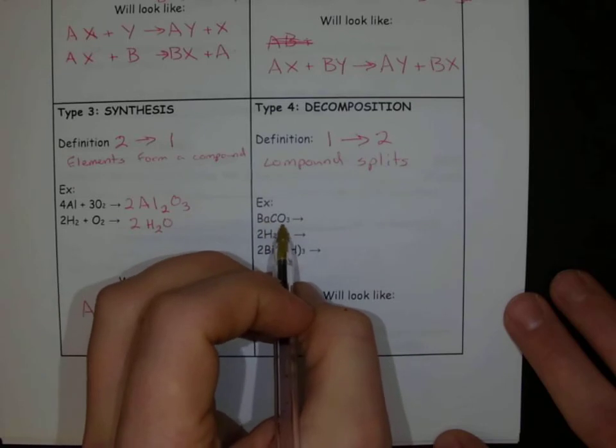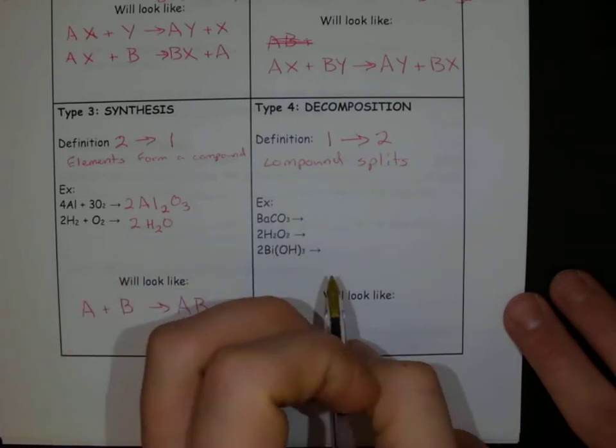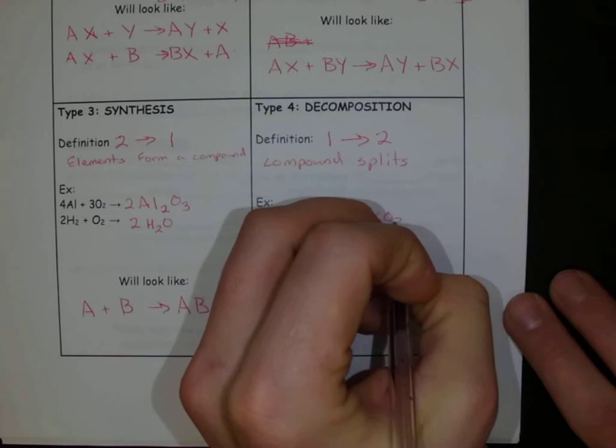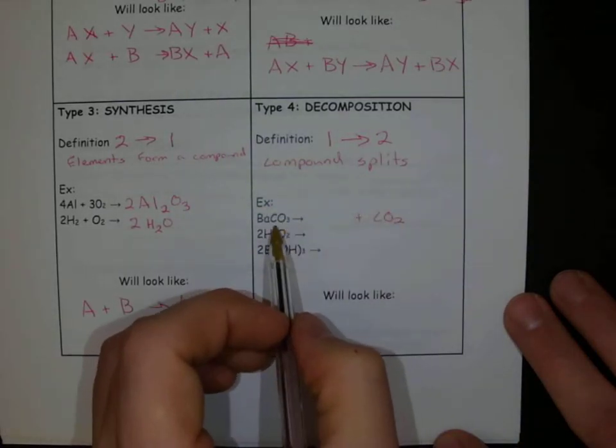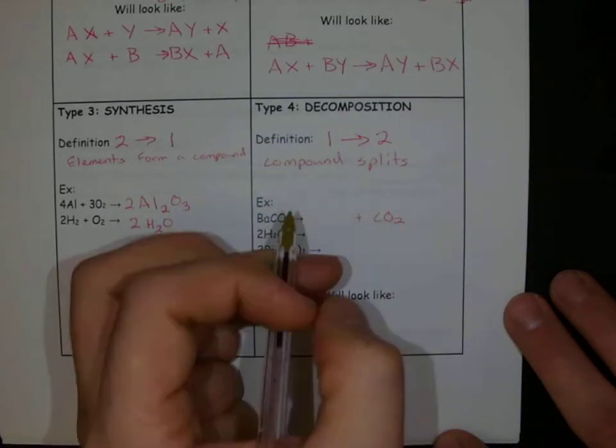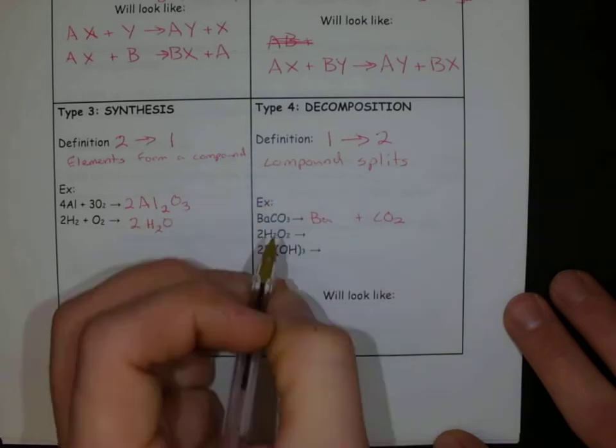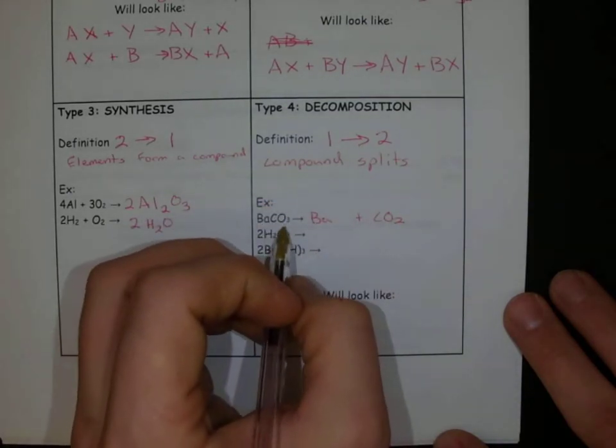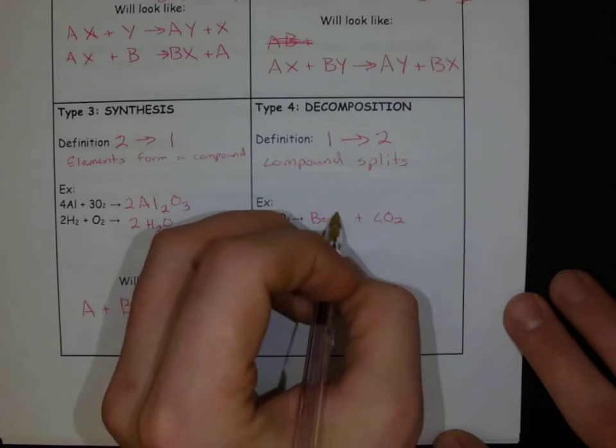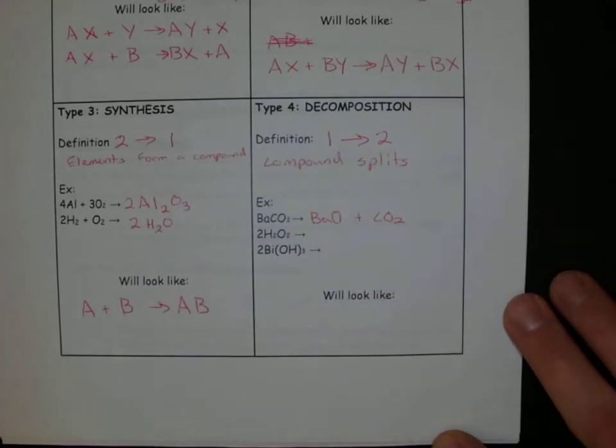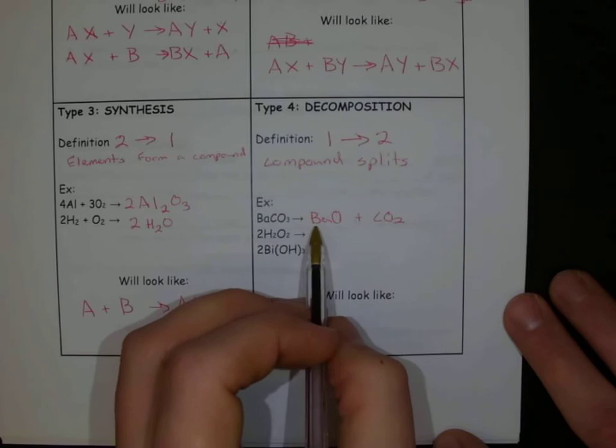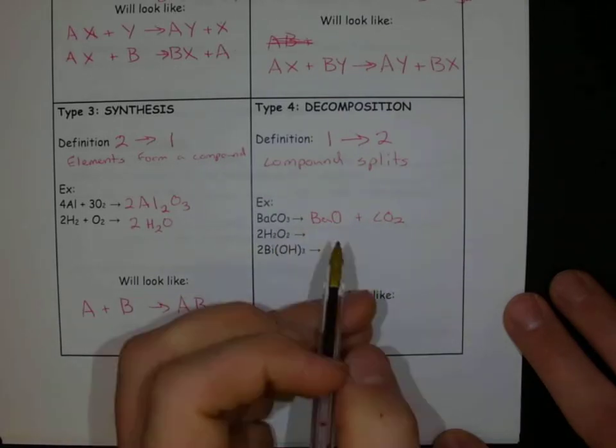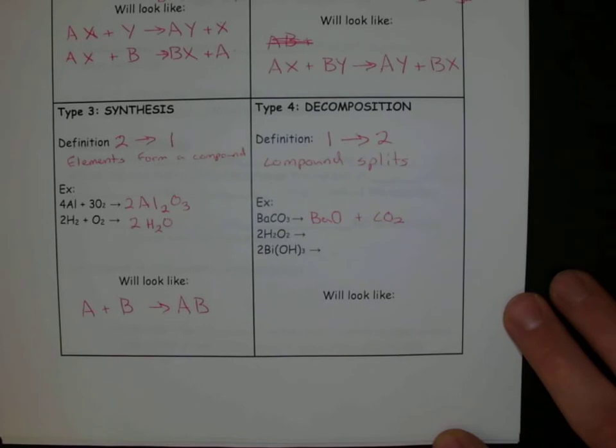So let's look at this first one, barium carbonate. Carbonates oftentimes break off to form CO2. Well, what else is left? If I remove CO2 from this, I've got barium still. Barium, I know, is a plus two charge generally. And then I removed a carbon, I removed two oxygens, I've got one oxygen left. There's my one oxygen. So my barium carbonate, the carbonate oftentimes kicks off CO2, and I'm left with barium oxide.